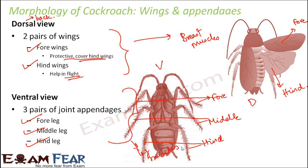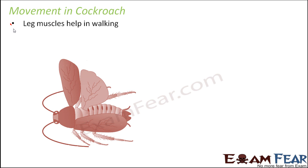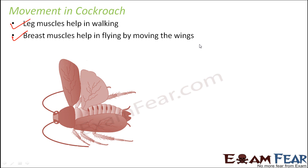In summary, when it comes to movement in a cockroach, the legs help in walking whereas the breast muscles help in flying by moving the wings.